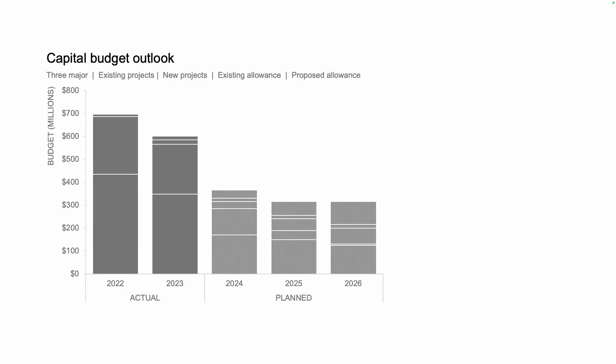Even after making these amendments, I'm not sure what message I'm supposed to take from this data. For the sake of clarity, let me explain the context. This graph attempts to show the budgets for a number of different types of projects. In the case of the first stack, these are the major projects.